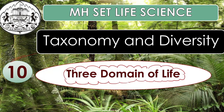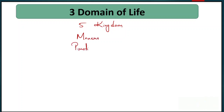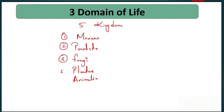Let's start today's session. What was the 5 Kingdom Classification? The 5 Kingdoms were: Monera, Protista, Fungi, Plantae, and Animalia. These 5 kingdoms were used to classify all organisms.